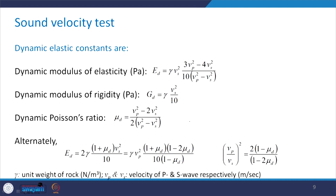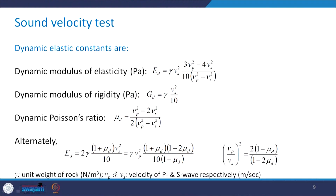Now let us see how these velocity values can be used to obtain the dynamic elastic constants. The dynamic modulus of elasticity in Pascals is given by a specific expression. Please be careful about the units, as terms like 3, 4, and 10 come into the formula. Here, gamma is the unit weight of rock in Newton per meter cube, and the wave velocities Vp and Vs are in meter per second, giving the dynamic modulus of elasticity Ed in Pascals.